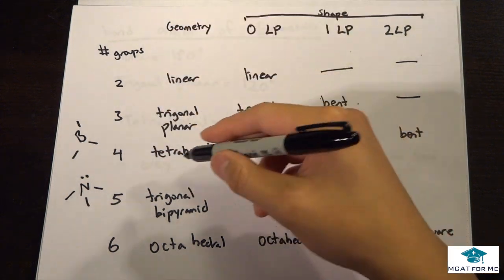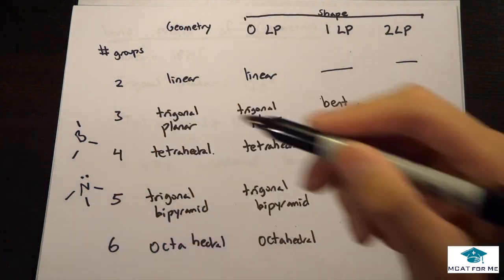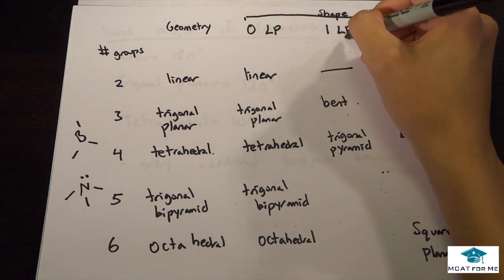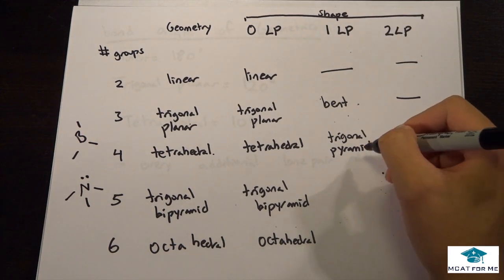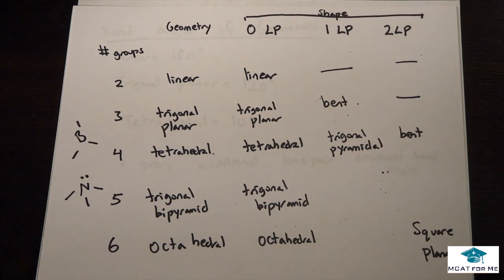The geometry is tetrahedral, right? Because the number of groups still is four. But what is the shape? Well, the shape - we know there's one lone pair, so we follow this table. The shape would be trigonal pyramidal.